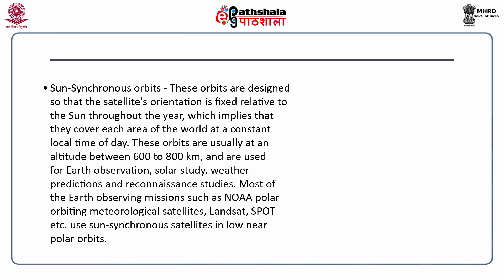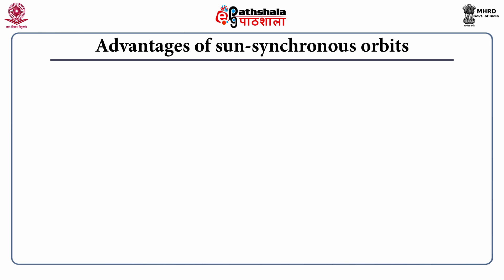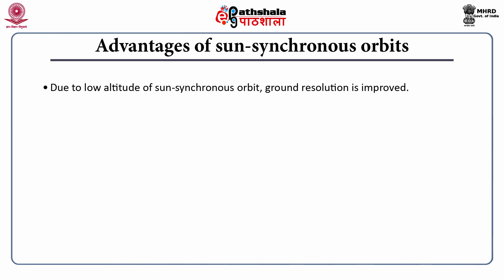The next orbit is the sun synchronous orbit. These orbits are designed so that the satellite's orientation is fixed relative to the sun throughout the year, which implies that they cover each area of the world at a constant local time of day. These orbits are usually at an altitude between 600 to 800 kilometers and are used for Earth observation, solar studies, weather predictions and reconnaissance studies. Most Earth observing missions such as NOAA polar orbiting meteorological satellites, Landsat, SPOT, etc. use sun synchronous satellites in low near polar orbits. An advantage of sun synchronous orbits is that due to their low altitude, the ground resolution is improved and regular scanning resolution along the ground track is obtained.